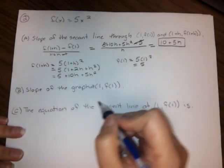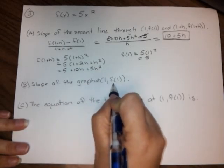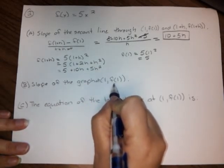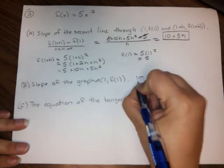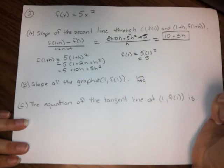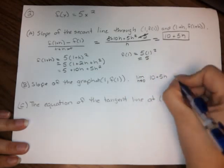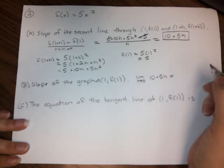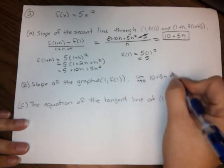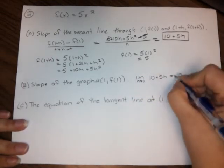So for part b, what they're asking for is the slope of the graph at the point (1, f(1)). Well, what we need to do for the slope of that, let's take the limit as h approaches 0 of 10 plus 5h. And that just means plugging the 0 in where the h is, the limit to a number. It's all simplified. All we need to do is plug that 0 in, and we're going to get 10. So that's what that answer is going to be.